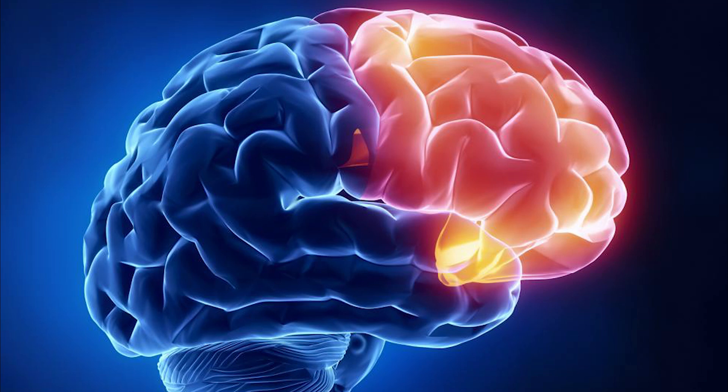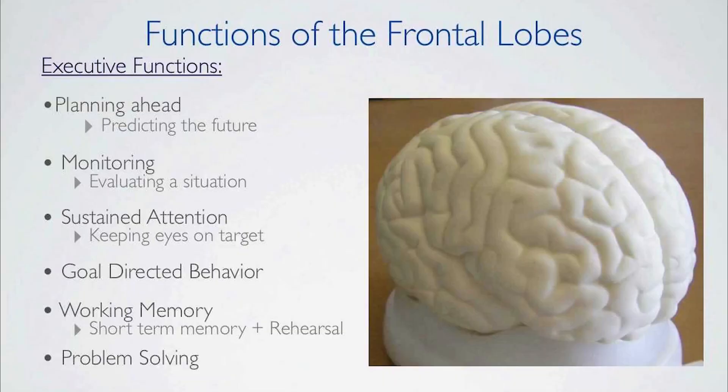The frontal lobe is the largest lobe of the brain and makes up about a third of the surface area of each hemisphere. On the lateral surface of each hemisphere, the central sulcus separates the frontal lobe from the parietal lobe. The lateral sulcus separates the frontal lobe from the temporal lobe.